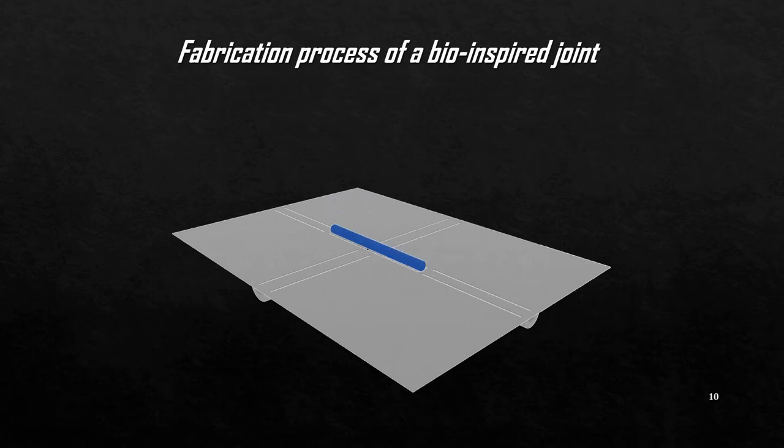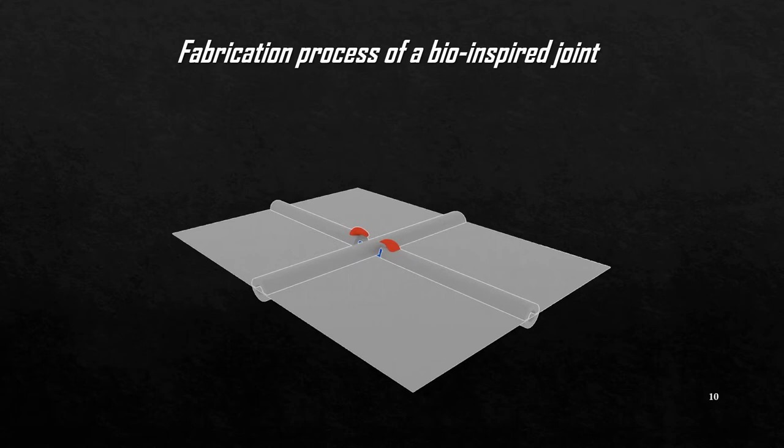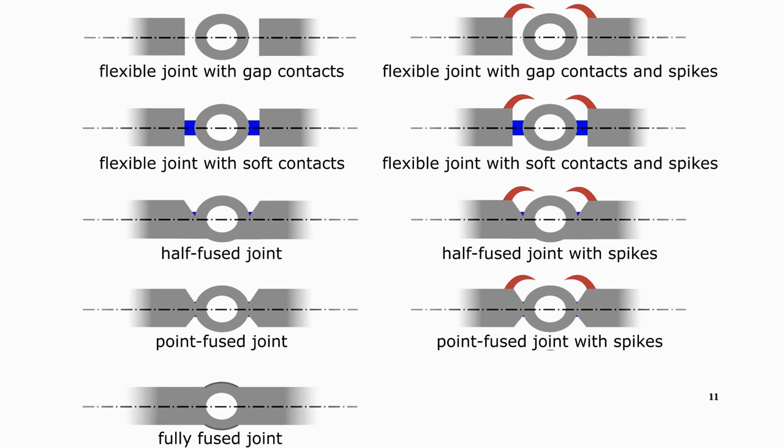Then, we inserted a segment of flexible filament into the gap area of the membrane as a representative element to the resilin. And finally, we 3D printed the second half of the joint on top of the membrane and flexible filament. Here, you can see 2D sketch of all the developed joint models.